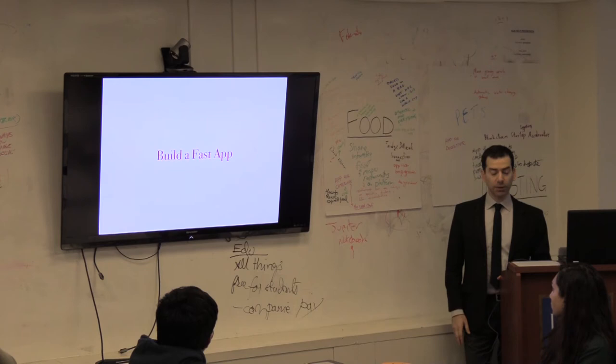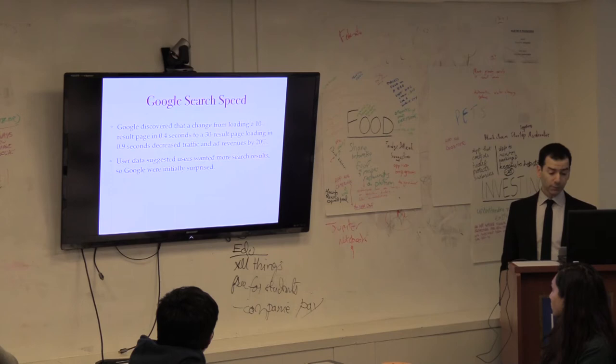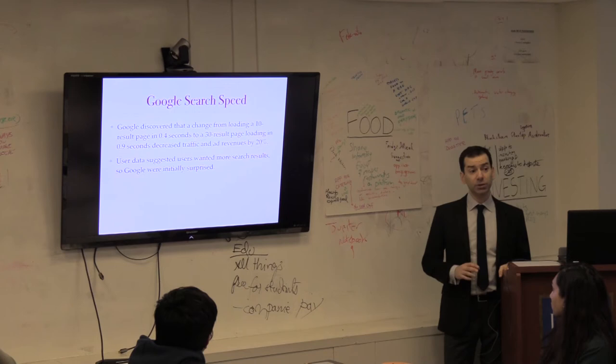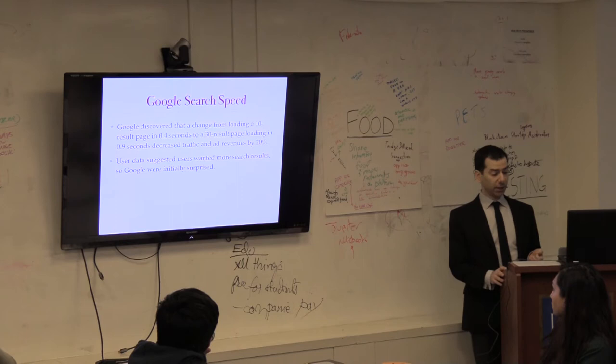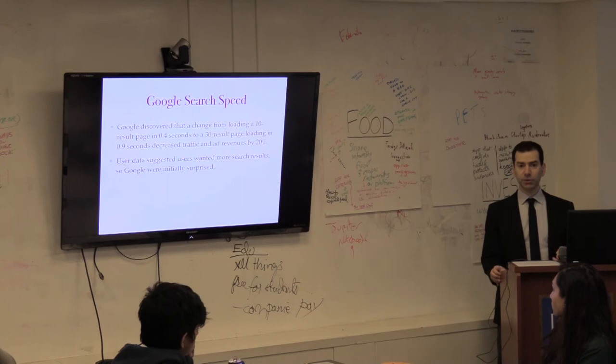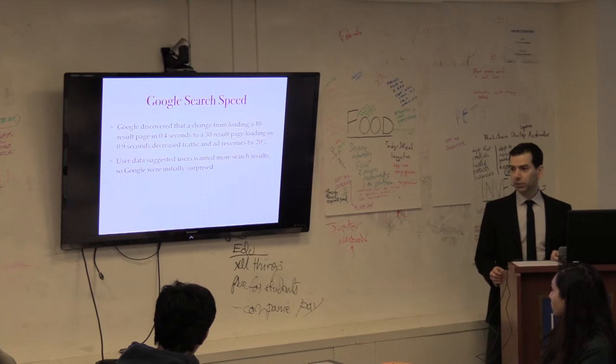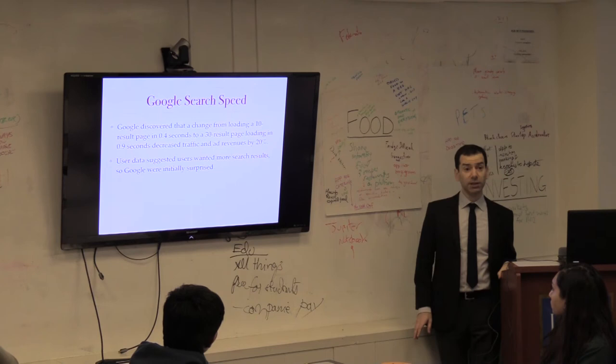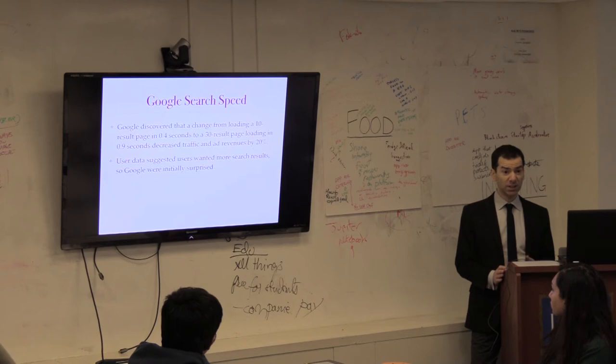So building a fast app. Speed is really important. It makes users use your application a lot more. Here's some good research. Google discovered that when they had their Google search results page, when they went from displaying 10 results on it to displaying 30 results on it, that decreased traffic and ad revenues by 20%. So the time it took to display the page only increased by half a second, but their traffic and ad revenue went down 20%. That's pretty significant. It's just half a second difference. So speed is really important.